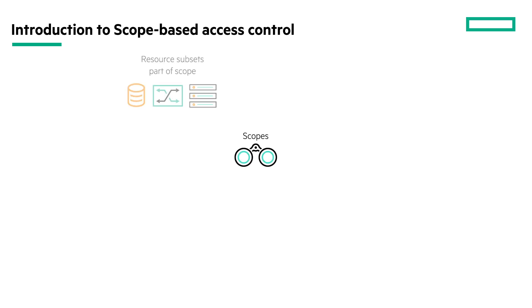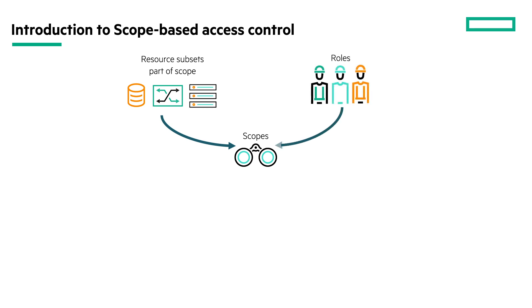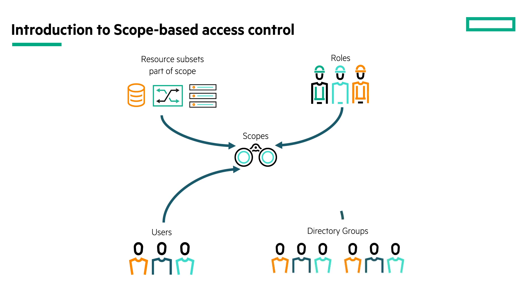A scope is a grouping of resources. You can choose which resource must be part of a scope. For example, if the scope has no hardware resources like servers or enclosures associated with it and is assigned to a user, then the user cannot access any server or enclosure. You can assign a role to a scope that decides what a user can do or cannot do on the resources that are part of the scope. You can create scopes based on organization, user role, and skills. You can assign this scope to users or directory groups in the form of permissions. To sum up, SPAC allows you to set up resources that users can access and operations the users can perform on the resources.